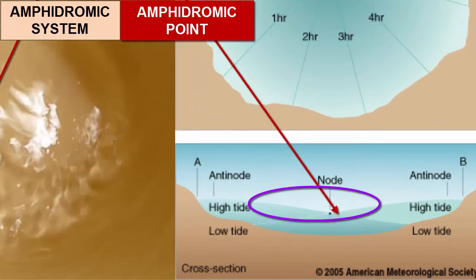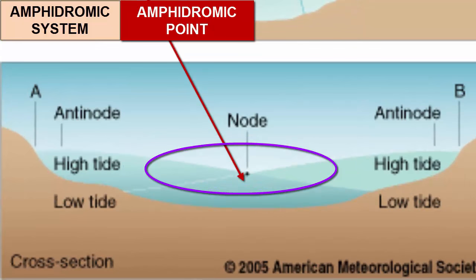This cross-section through the amphidromic system points out what the sloshing looks like from the side at two moments in time, one where one side has water sloshing up, high tide, and the other water sloshing away, low tide, and then the opposite.